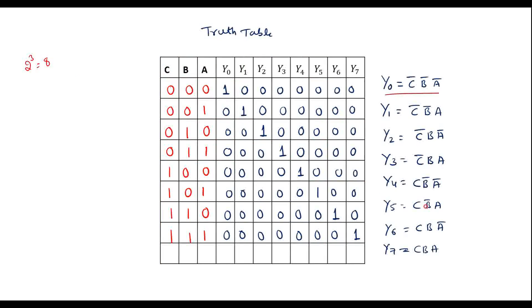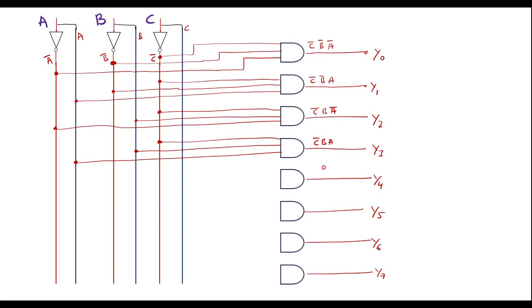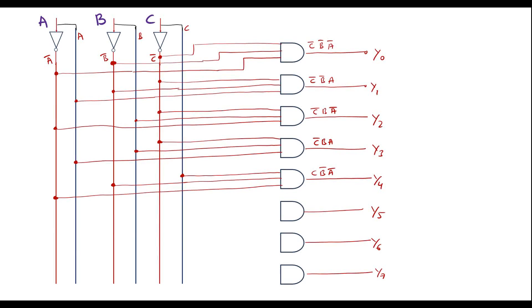For Y4 = C·B̅·Ā: connect C line, B̅ line, and A̅ line. For Y5 = C·B̅·A: connect C line, B̅, and A line.